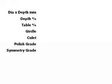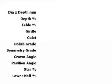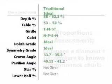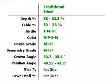Some details are listed for all diamonds, but to evaluate cut, you will need these as well. Basic proportions assessment is done by comparing these parameters to known performance charts. Here are the American Gem Society's traditional ideal proportions. For ten years, diamonds in this range were automatically graded ideal by the AGS.